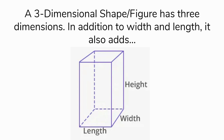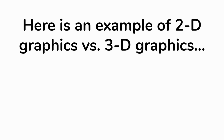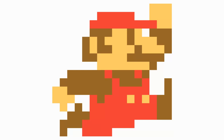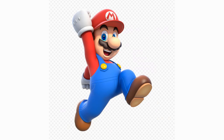Here's another review — an example of 2D graphics versus 3D graphics. Here we have old school 8-bit Mario from the original Super Mario Brothers. He's made out of pixels and he's two-dimensional — he's flat. He has length and height, but he doesn't have the depth. And then you have a 3D version of Mario, and it doesn't look flat.